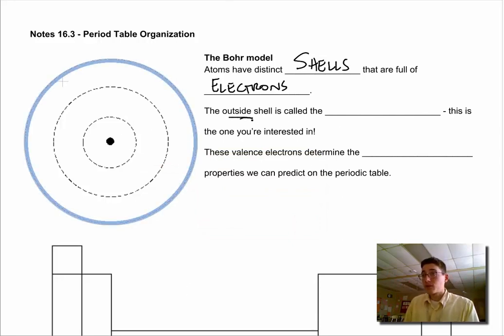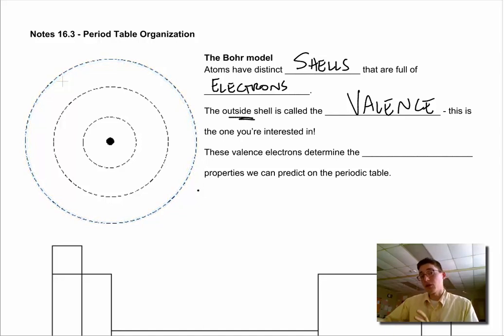We're interested in the outside shell, and this is called the valence. And valence just means outside, and we're interested in that because those are the electrons that are involved in everything from reactivity to bonding, and that's what we're going to be covering as we go further into the chapter. So the valence electrons determine the chemical properties that we can predict using the periodic table.